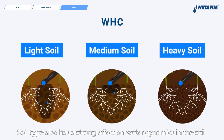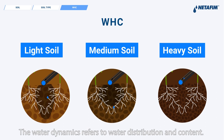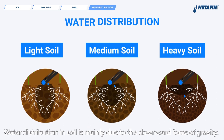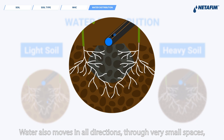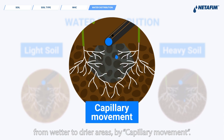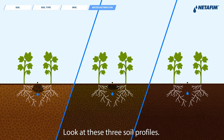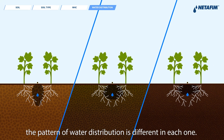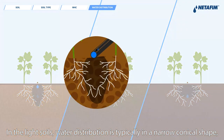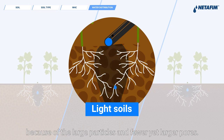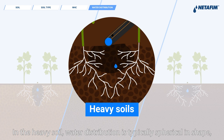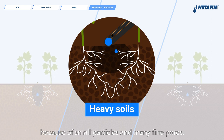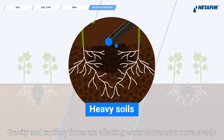Soil type also has a strong effect on water dynamics in the soil — referring to water distribution and content. Water distribution in soil is mainly due to the downward force of gravity, but water also moves in all directions through very small spaces from wetter to drier areas by capillary movement. In light soils, water distribution is typically a narrow conical shape because large particles and fewer yet larger pores mean gravity forces dominate over capillarity. In heavy soils, water distribution is typically spherical because small particles and many fine pores cause gravity and capillary forces to affect water movement more evenly.